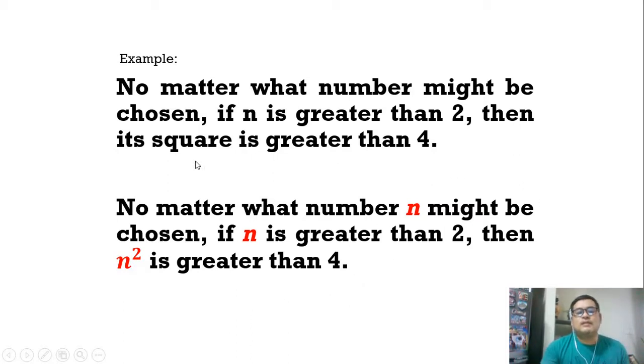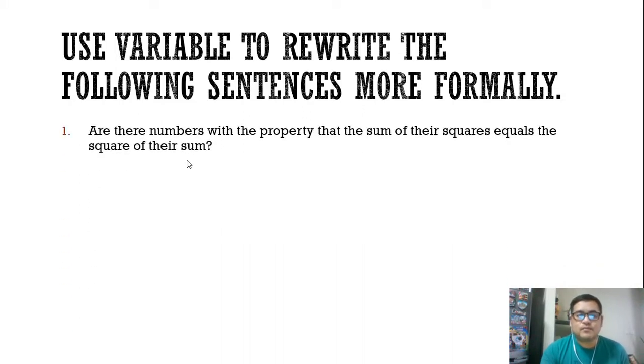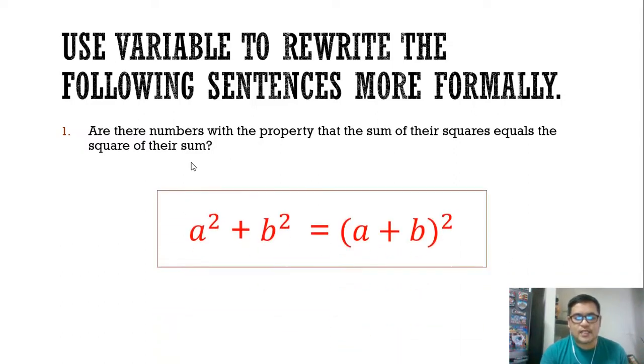Use variable to write the following sentences more formally. This will be your assignment if you happen to watch this particular short video: Are there numbers with the property that the sum of their squares equals the square of their sum? This will be the thought that you are going to ponder.